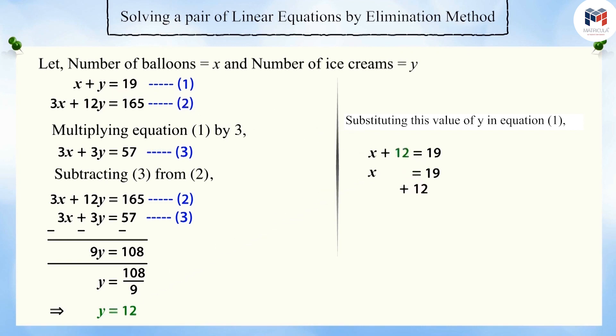Solving further, we get x is equal to 7. Therefore, Rahul bought 7 balloons and 12 ice creams.